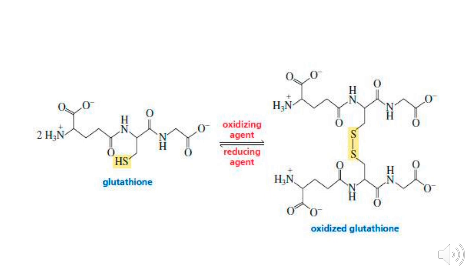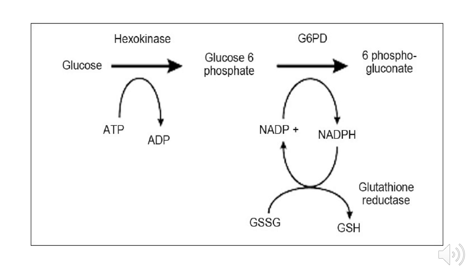Since we are exposed to oxidizing agents every day, we need to reconvert oxidized glutathione back to its reduced form so it can continuously protect us. In the pentose phosphate shunt, glucose is acted upon by hexokinase to form glucose 6-phosphate. This reacts with NADP in the presence of glucose 6-phosphate dehydrogenase, converting it into 6-phosphogluconate while NADP is reduced to NADPH. The reduced NADPH then reconverts oxidized glutathione to its reduced form.